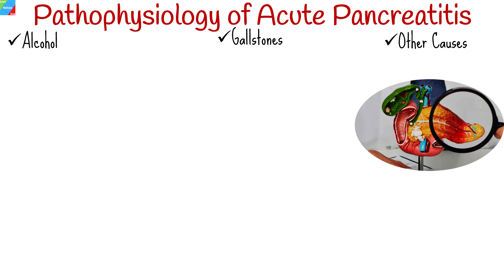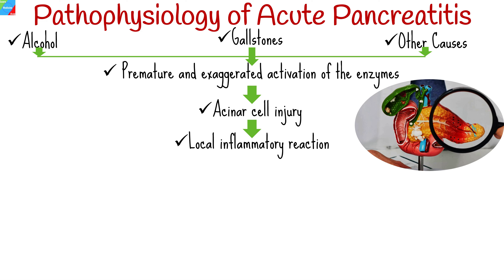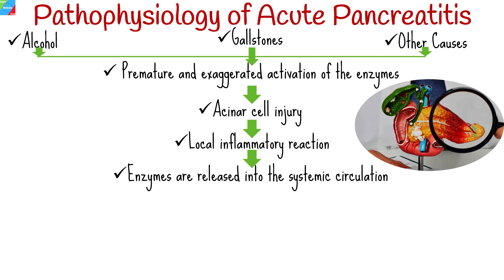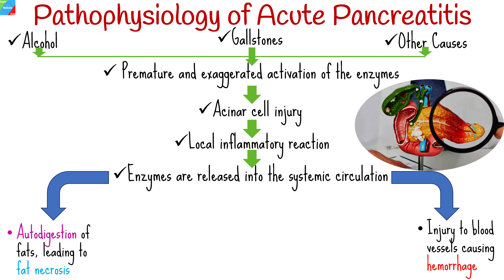Each of the causes discussed leads to premature intra-acinar cell activation of digestive zymogens. These enzymes, once activated, cause acinar cell injury. Acinar cell injury early in acute pancreatitis leads to a local inflammatory reaction. If this inflammatory reaction is marked, the digestive enzymes from the pancreas are released into the bloodstream and into systemic circulation, where they cause autodigestion of fat, leading to fat necrosis and injury to blood vessels causing hemorrhage.